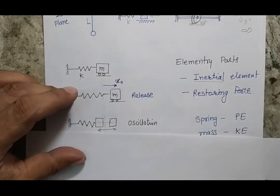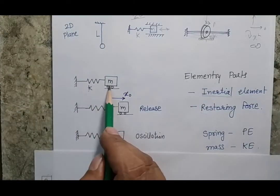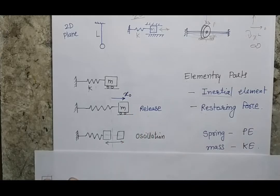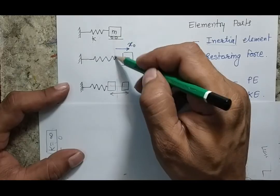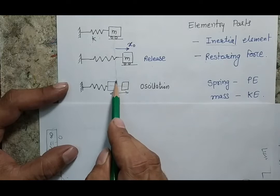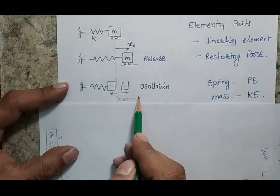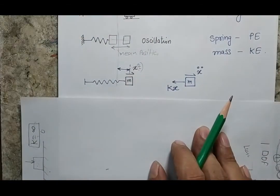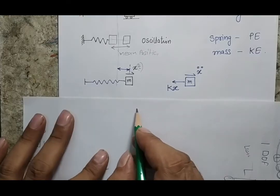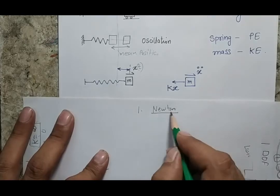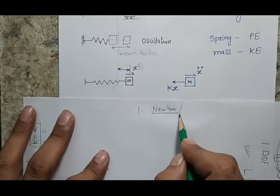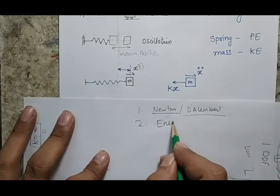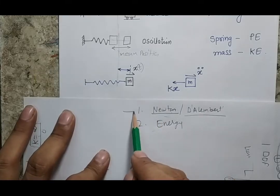Now I will define free vibration. Initially the mass is at rest with no spring extension. I give an initial deflection x₀ and release the system. After releasing, it exhibits oscillatory motion about the mean position. I want to write the equation of motion of this system. There are two approaches: one based on Newton's law (also called D'Alembert's method), and the other is the energy approach. In this session we will see both.